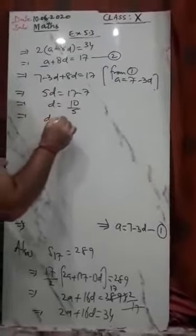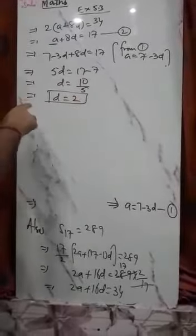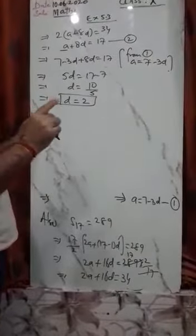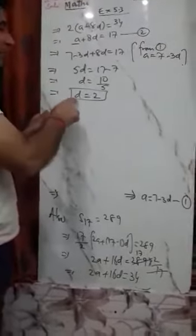Now that we have the common difference, we need the first term. Putting the value of d = 2 in equation (1): a = 7 minus 3 into 2 = 7 minus 6 = 1. So a = 1. We now have both a = 1 and d = 2. Now we need to find the sum of first n terms.